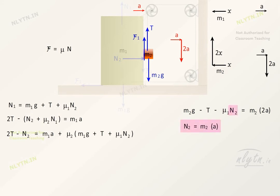Using N2 from this equation, we get m2g minus T minus μ1m2a is equal to m2 into 2a. Therefore, T is equal to m2g minus μ1m2a minus 2m2a.